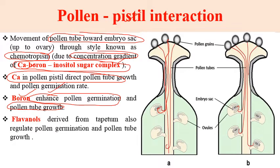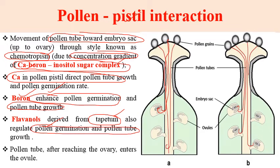There are also chemicals like flavonols, which are derived from tapetum - a nutritive tissue present in the anther - which also regulate pollen germination and pollen tube growth. After reaching the ovary, the pollen tube enters the ovule. There are certain genes which also help in germination of pollen grains.